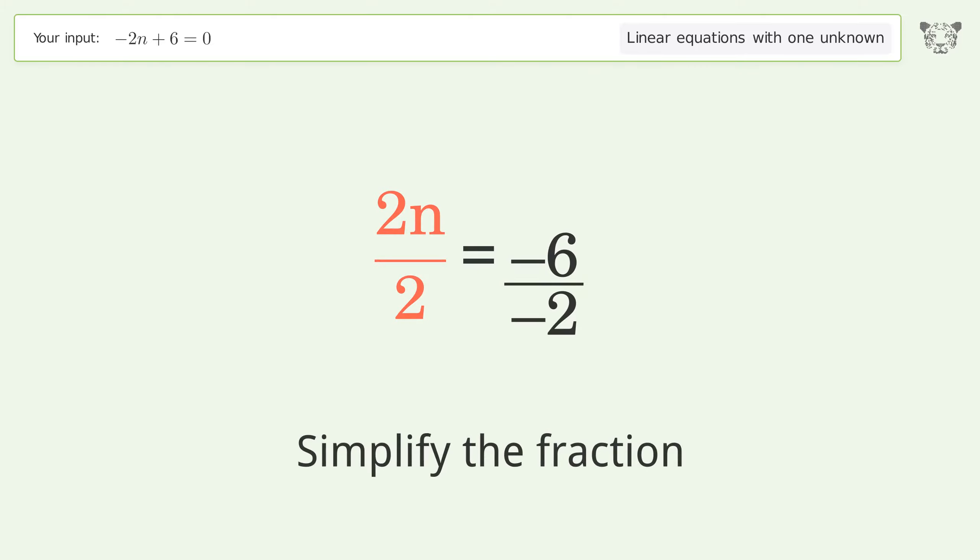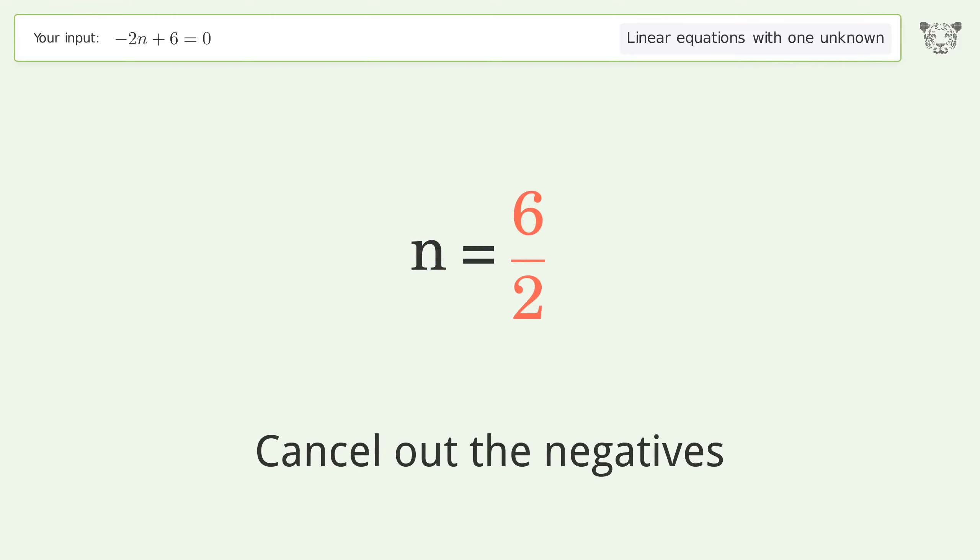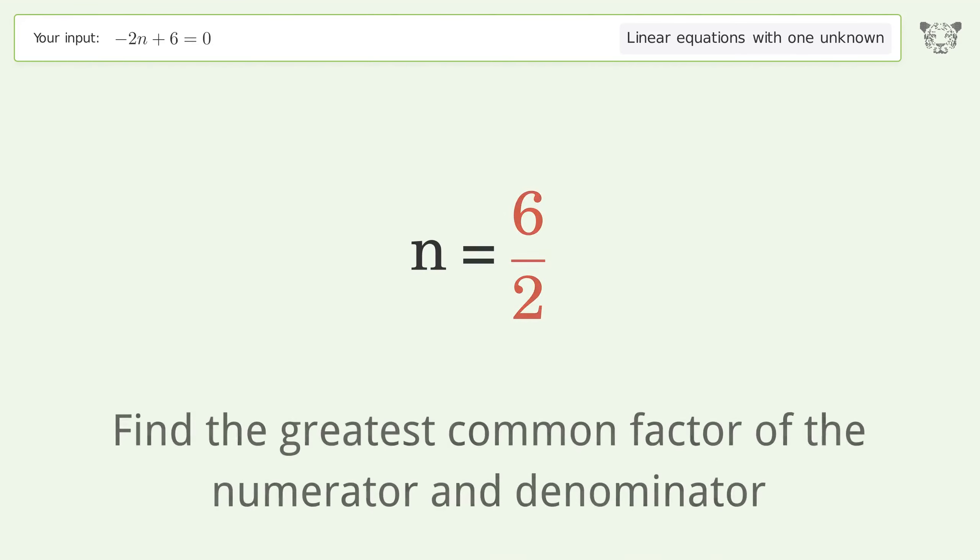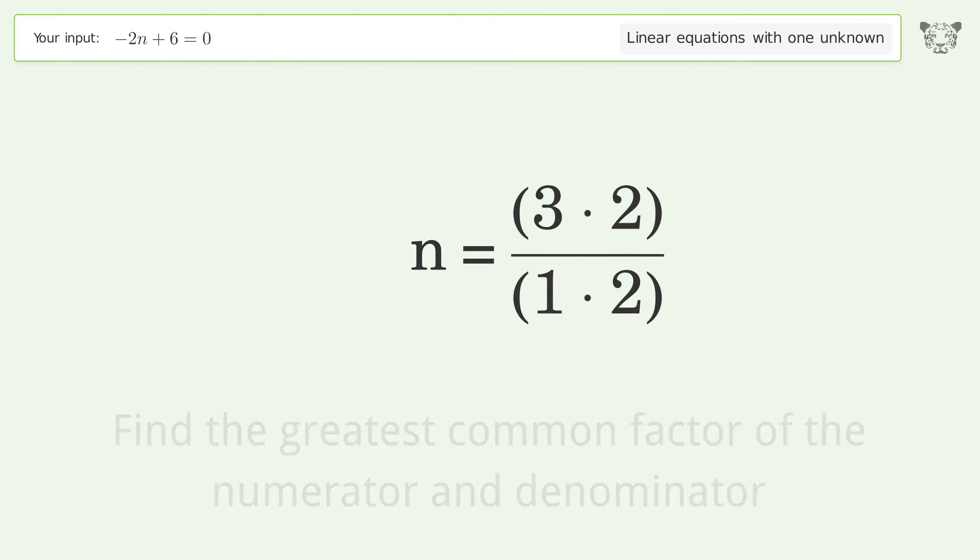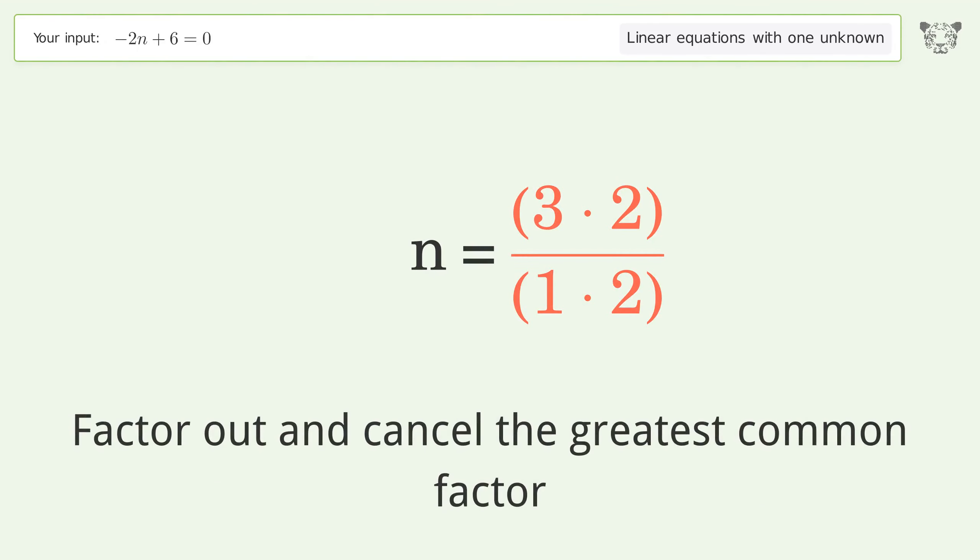Simplify the fraction. Cancel out the negatives. Find the greatest common factor of the numerator and denominator. Factor out and cancel the greatest common factor.